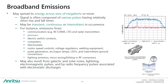Intentional broadband emissions include, for example, communication and radar transmitters and jammers. But there are also plenty of unintentional sources causing broadband emissions, often composed of narrow pulses, which we call impulse noise. Some examples are electric switch contacts, welding equipment, LED bulbs, intermittent ground connections, or micro arcing or fritting in RF connectors.